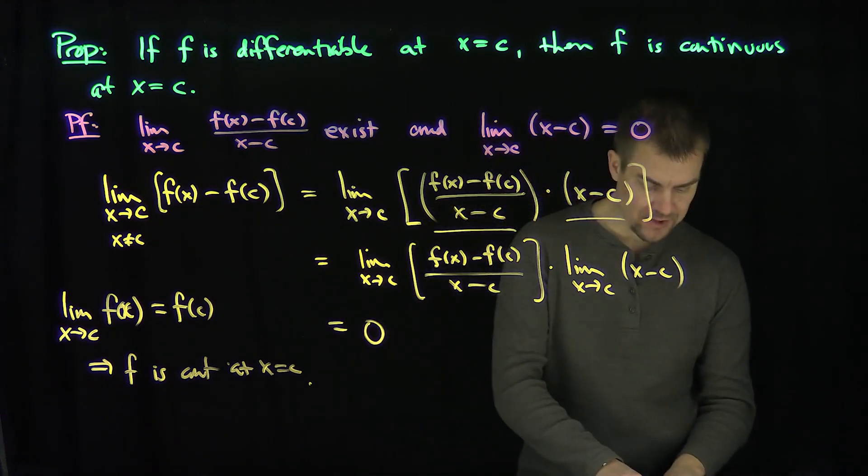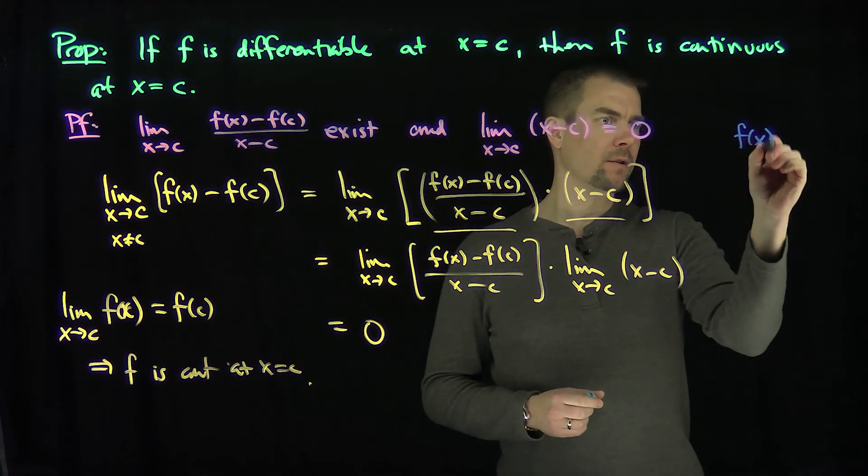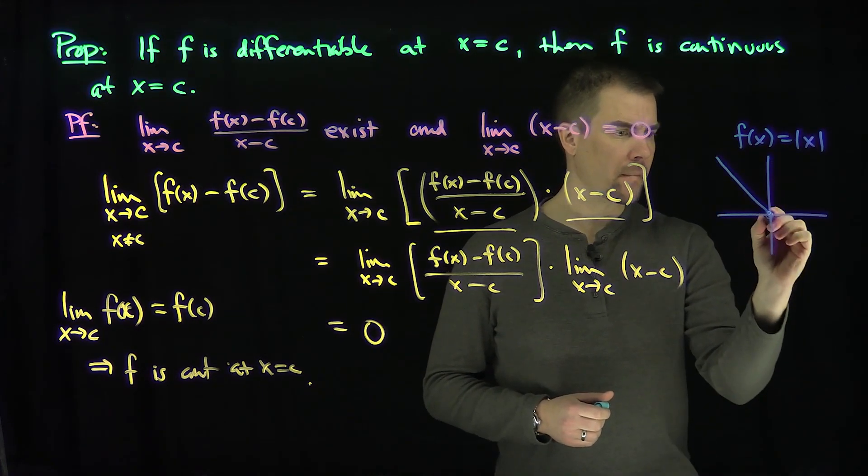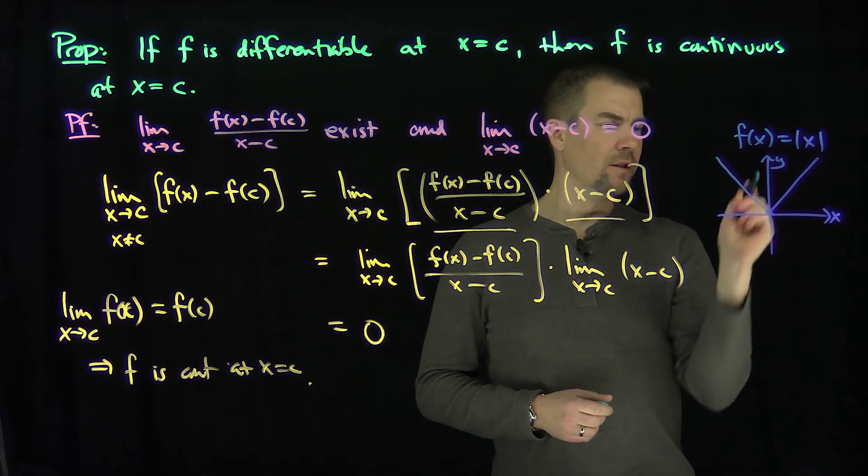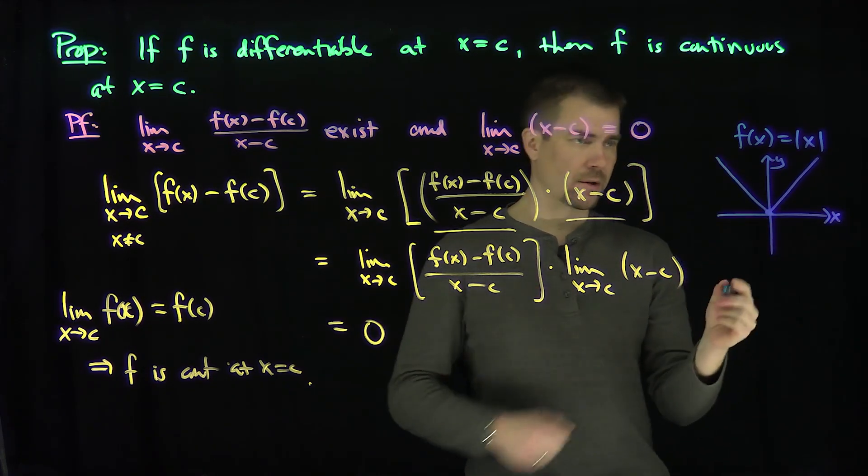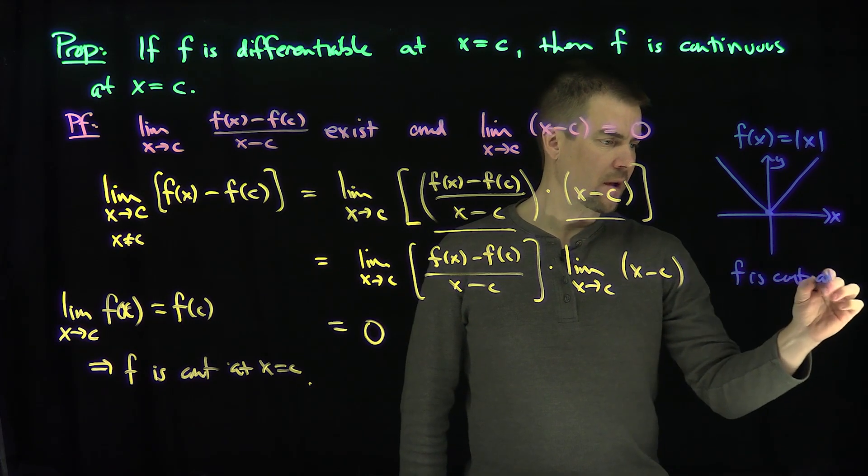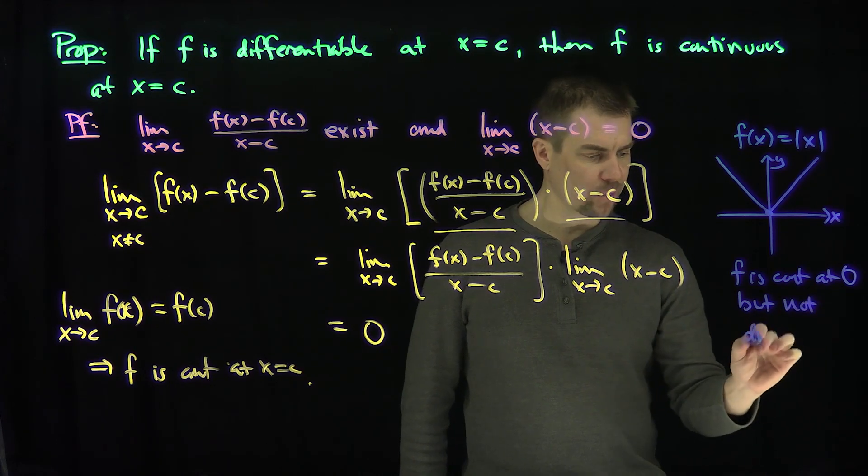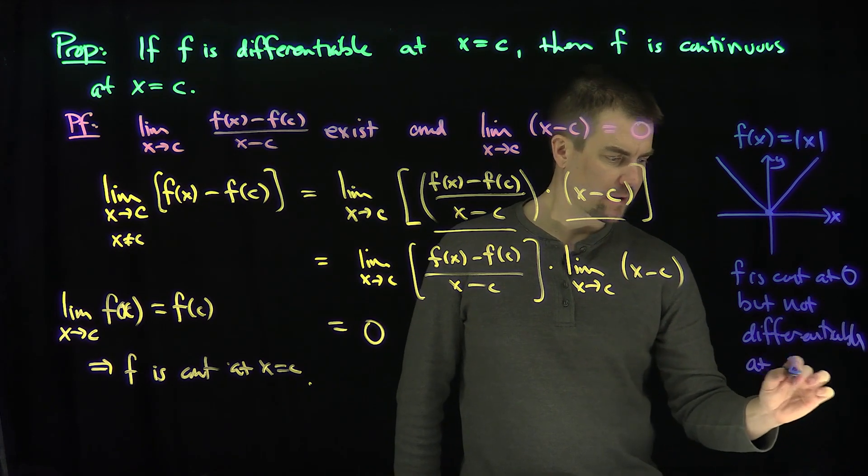Now, of course, we know the converse of this is not true. In particular, we know that this function over here, f(x), which is absolute value of x, looks like this. There's x and there's y. And clearly, this function is continuous at zero. This is continuous, f is continuous at zero, but not differentiable at zero.